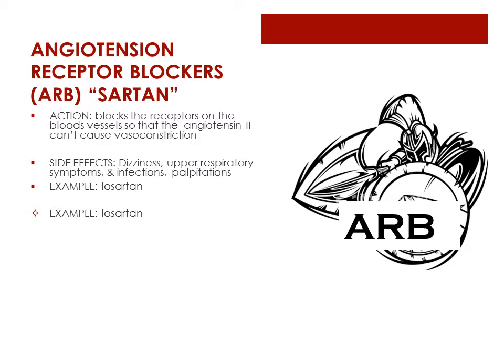The ARBs, or angiotensin receptor blockers, allow the conversion of angiotensin 1 to angiotensin 2, but they block the receptors on the blood vessels so that angiotensin 2 can't cause vasoconstriction. When peripheral vascular resistance is decreased, it brings blood pressure down. ARBs may be used if the patient can't tolerate ACE inhibitors. Side effects include dizziness, upper respiratory symptoms like sinusitis, pharyngitis, rhinitis, respiratory infections, and palpitations. Angioedema is an adverse effect. Sartan is an example — these meds end in -sartan. As always, we must assess blood pressure.